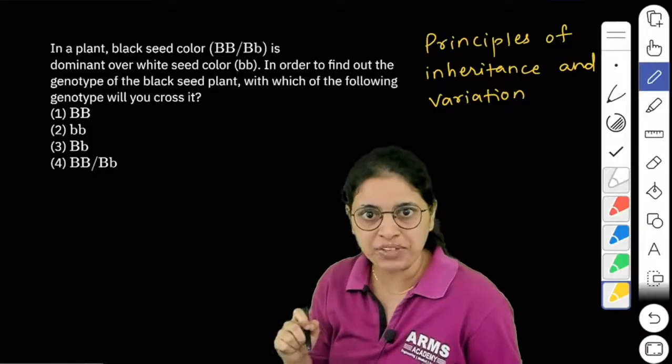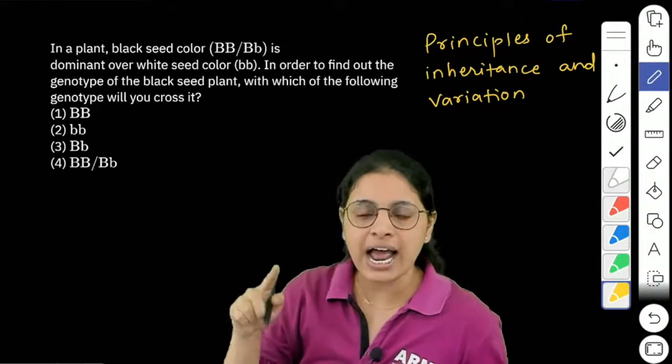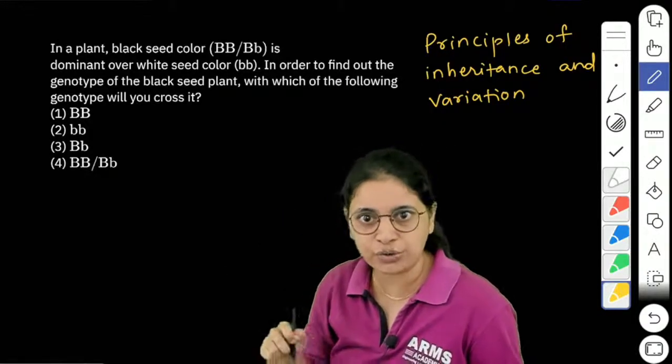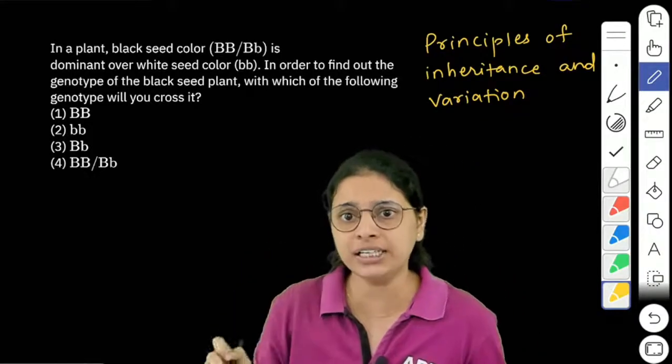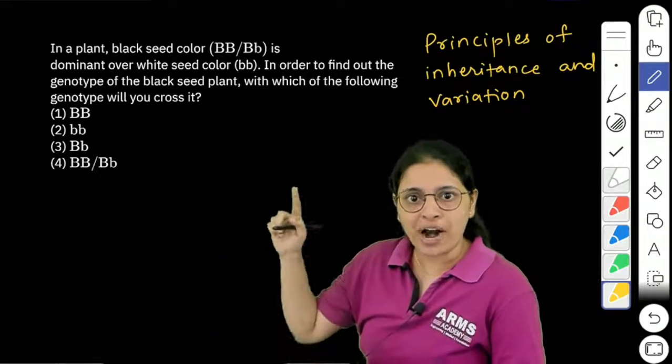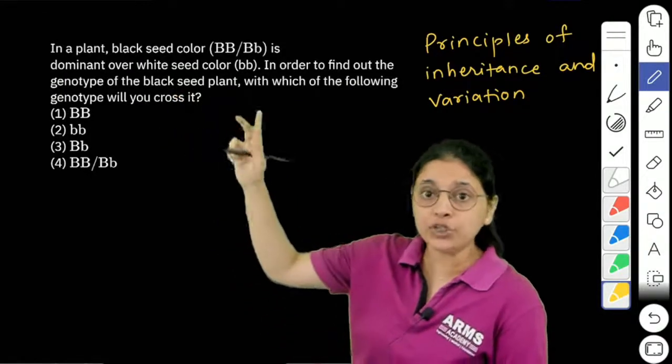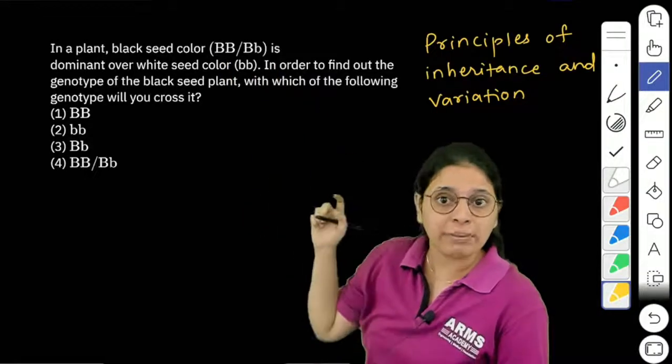Capital B is for black color. White seed color is a recessive trait expressed only in the homozygous recessive genotype bb. Now the question is, if we have to find out the genotype of the black-seeded plant, there are two possibilities: it can be either BB or Bb.